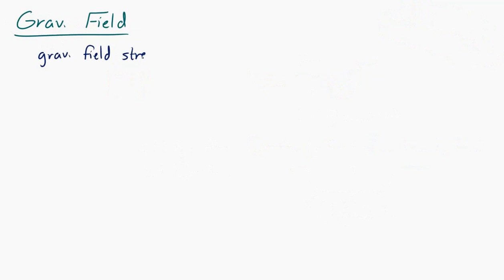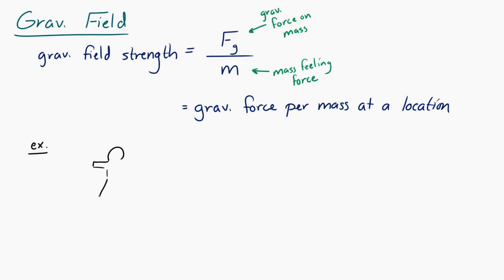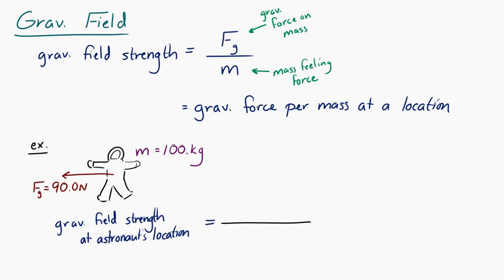Now let's look at gravitational field. The gravitational field strength is defined as the gravitational force on a mass at a location divided by that mass — it's gravitational force per mass. For example, if an astronaut has a mass of 100 kg and the gravitational force on them is 90 Newtons, the gravitational field strength at that location is 90 N / 100 kg = 0.900 m/s² to the left.